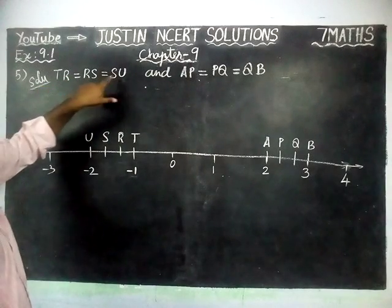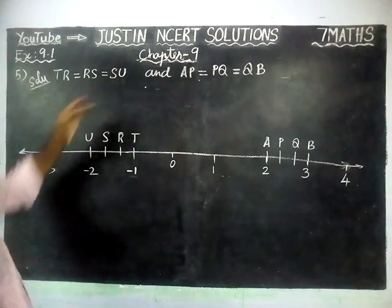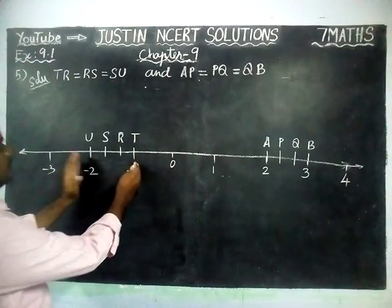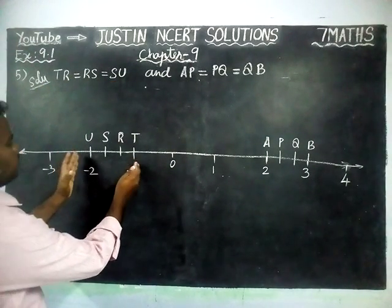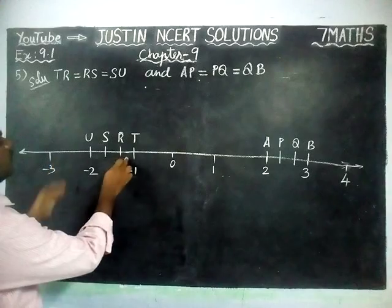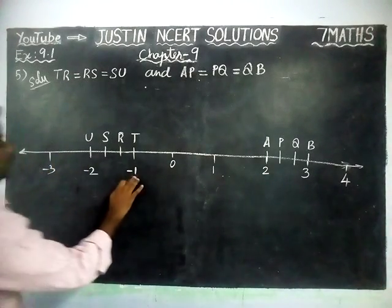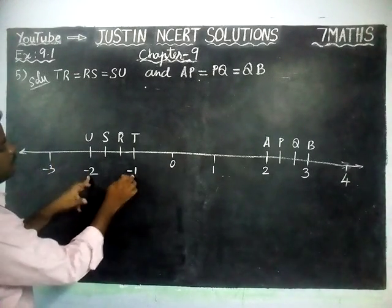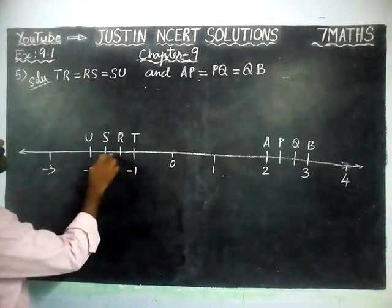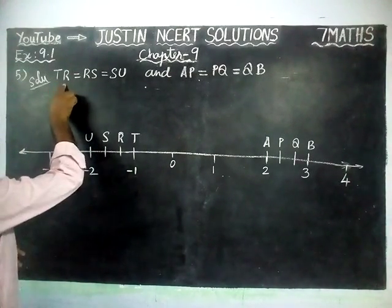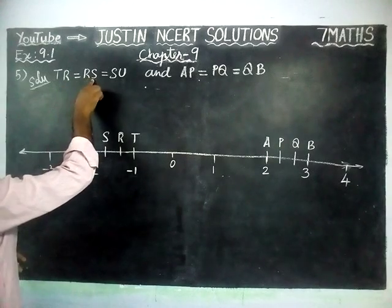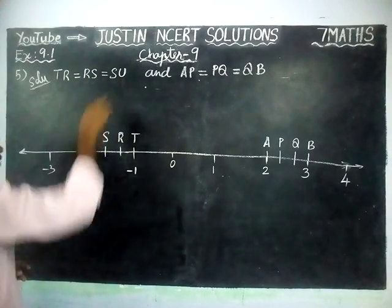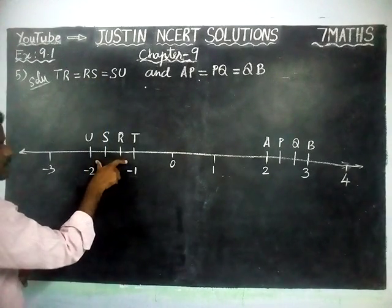Here, clearly they said that TR is equal to RS is equal to SU. So between minus 1 and minus 2, this path is separated into three equal parts.